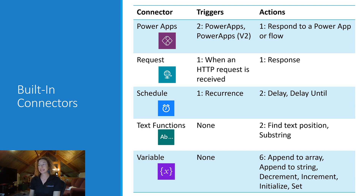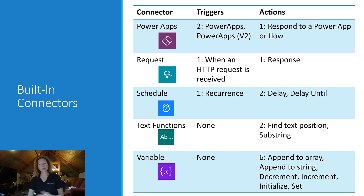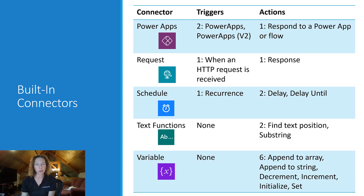Then we come to Schedule. The trigger there is Recurrence, which can be used for a scheduled cloud flow. There are also two actions: Delay and Delay Until — super valuable, like classic workflow waits.